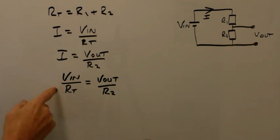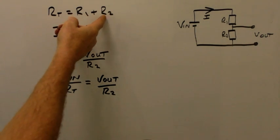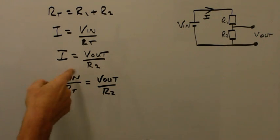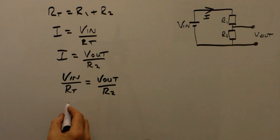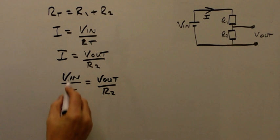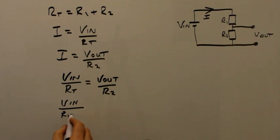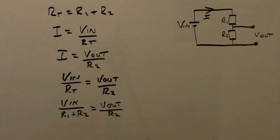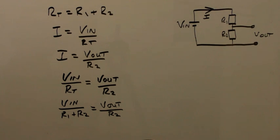We also know that Rt is equal to R1 plus R2, so we can replace Rt in this part of the equation and say that V in over R1 plus R2 equals Vout over R2. We now have our equation, and all that's left to do is to make Vout the subject of the equation.